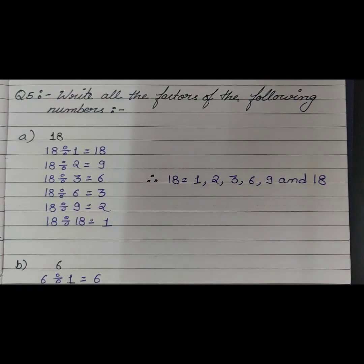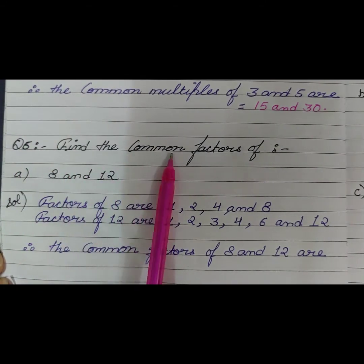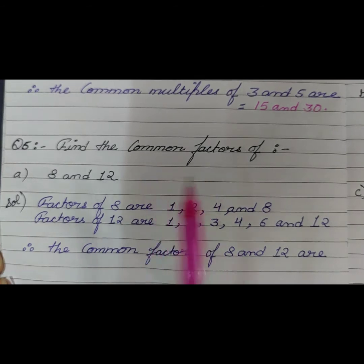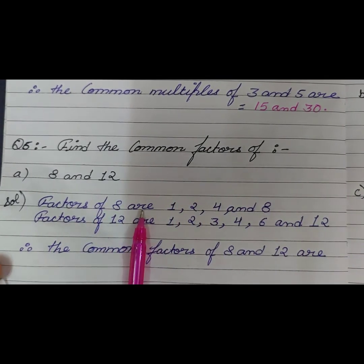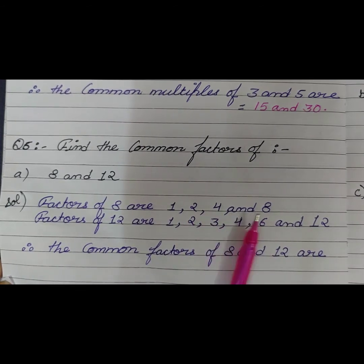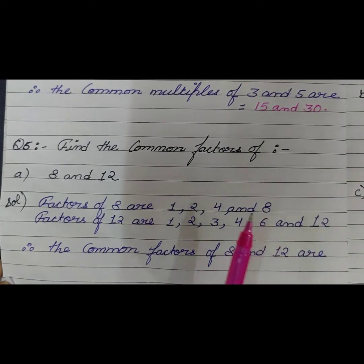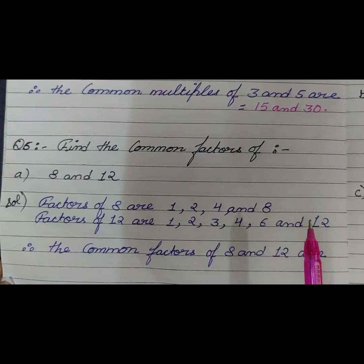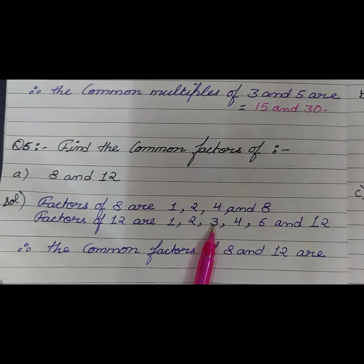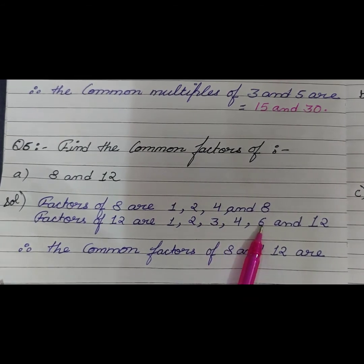Question number 6: Find the common factors of 8 and 12. The factors of 8 are: 1 is obvious, 2 yes because it is a divisor of 8, then 4 and 8. We cannot go beyond 8 because factors are finite, or a factor is smaller than or equal to the given number. Now find the factors of 12: 1 is obvious, then 2, then 3, 4, 6, and 12.